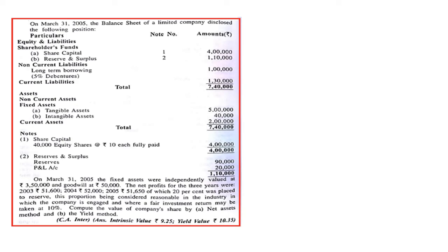We will take the first question. On 31st March 2005, the balance sheet of a limited company disclosed the following position. Particulars, note number, and amount are given. This is the new format of balance sheet as per Schedule 3 of the Companies Act 2013. Under shareholders' funds we have share capital, note number 1. When you see note number 1, we have 40,000 equity shares of rupees 10 each, fully paid — 4 lakhs.